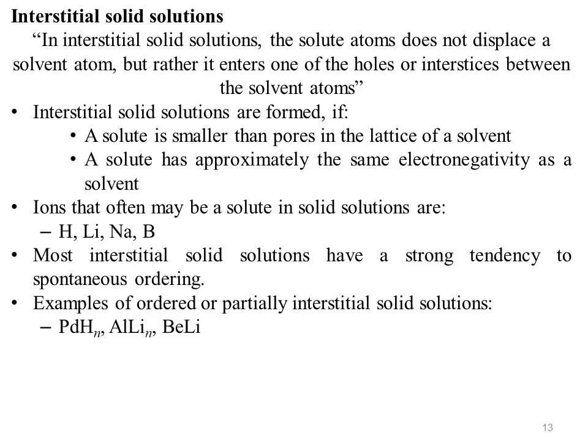Ions that often may act as solute in interstitial solid solutions are hydrogen, lithium, sodium, and boron. Most interstitial solid solutions have a strong tendency to spontaneous ordering. Examples of ordered or partially interstitial solid solutions are palladium hydride, aluminium lithium, and beryllium lithium.